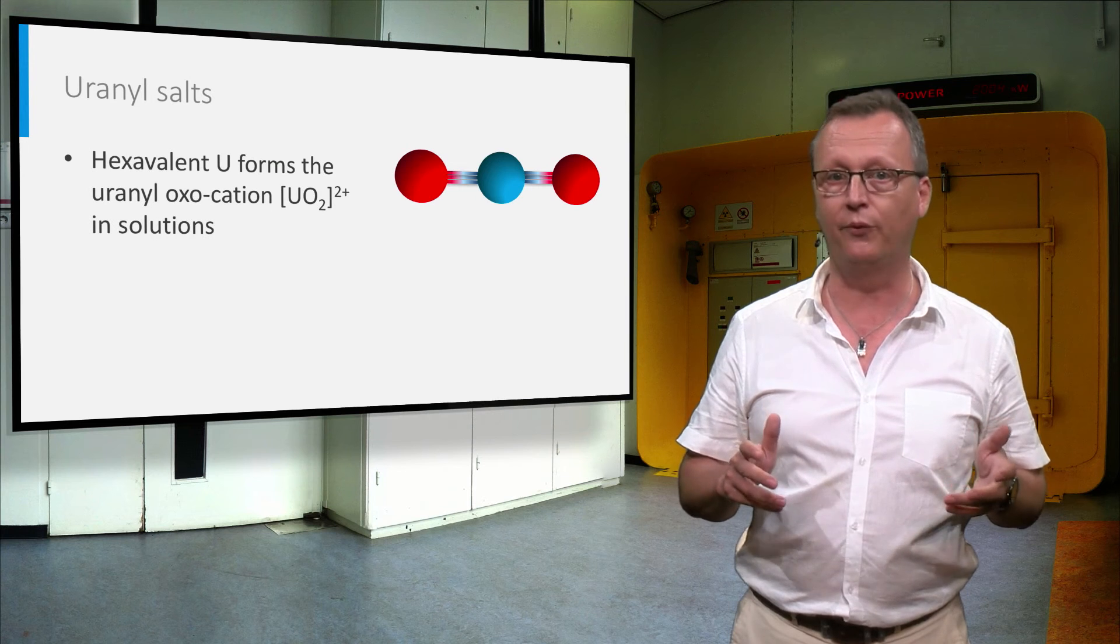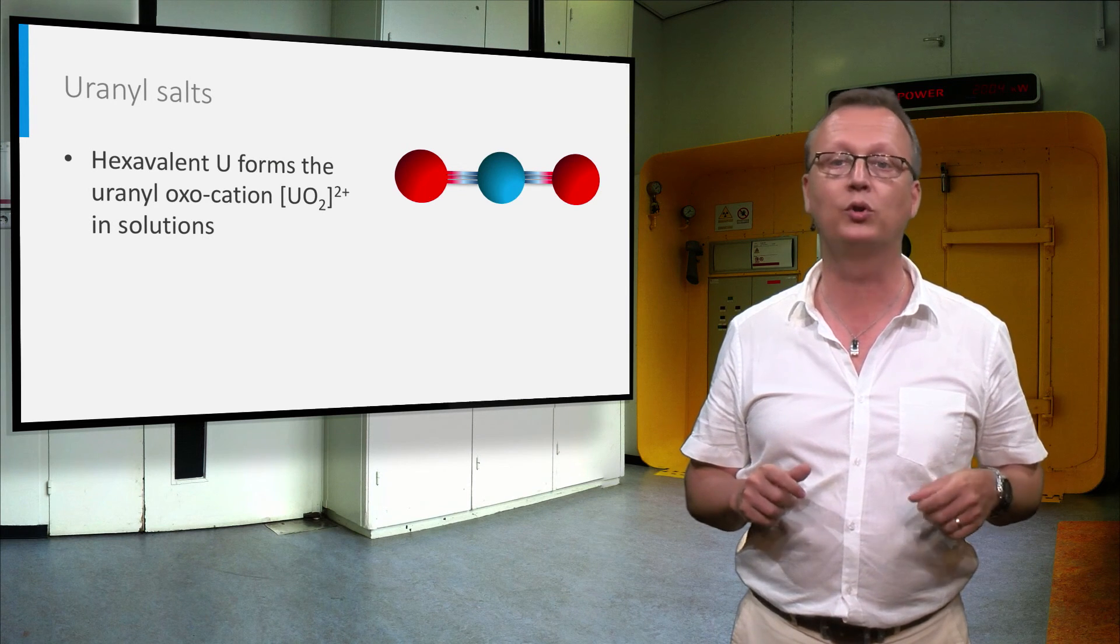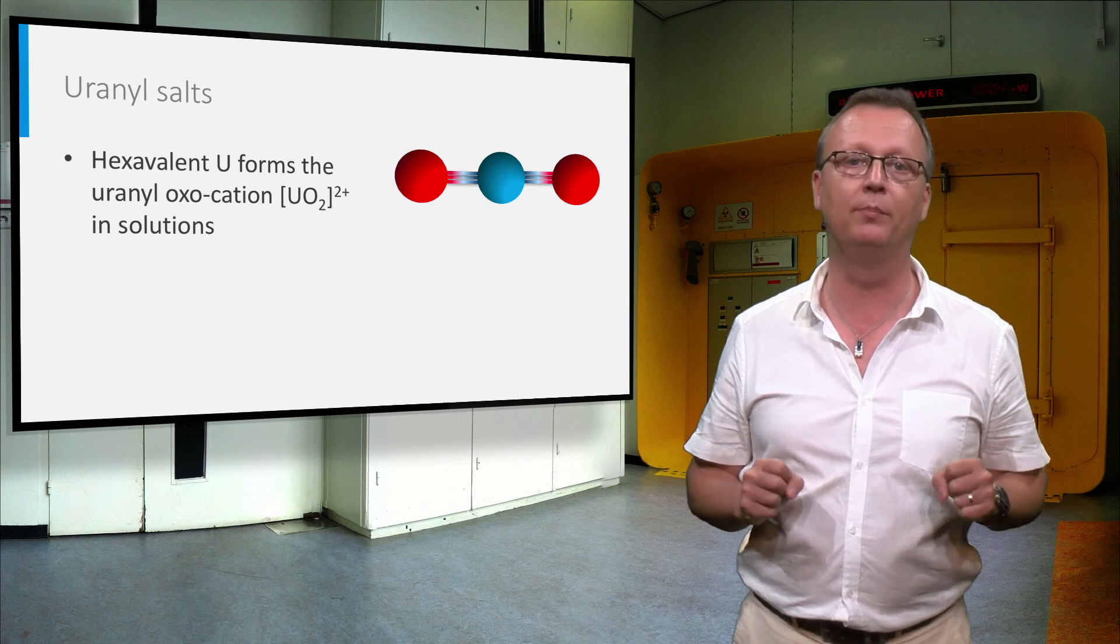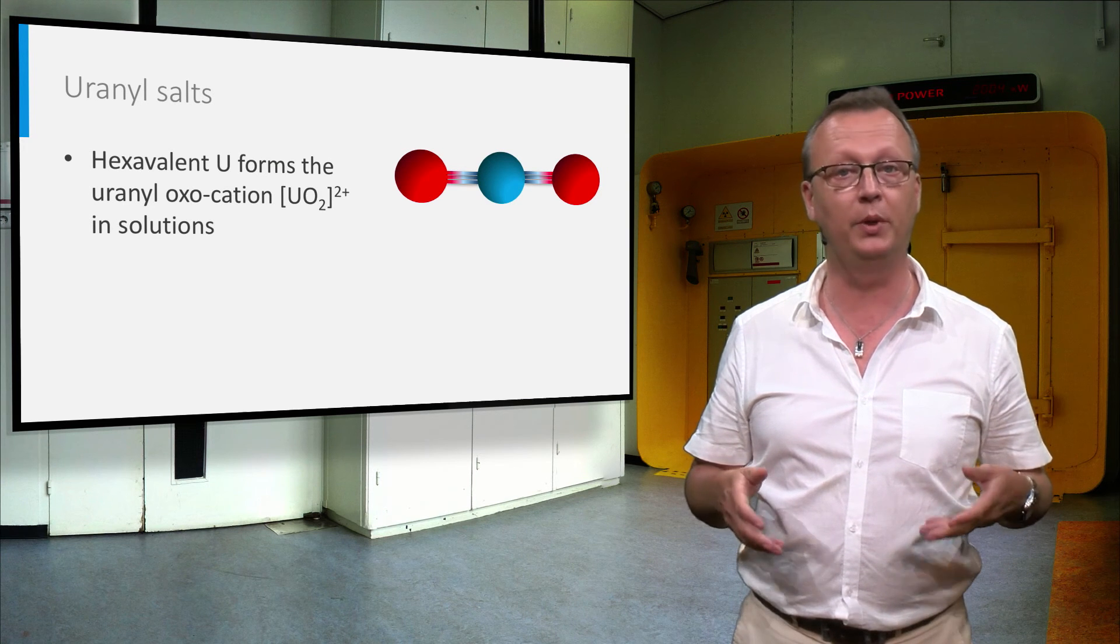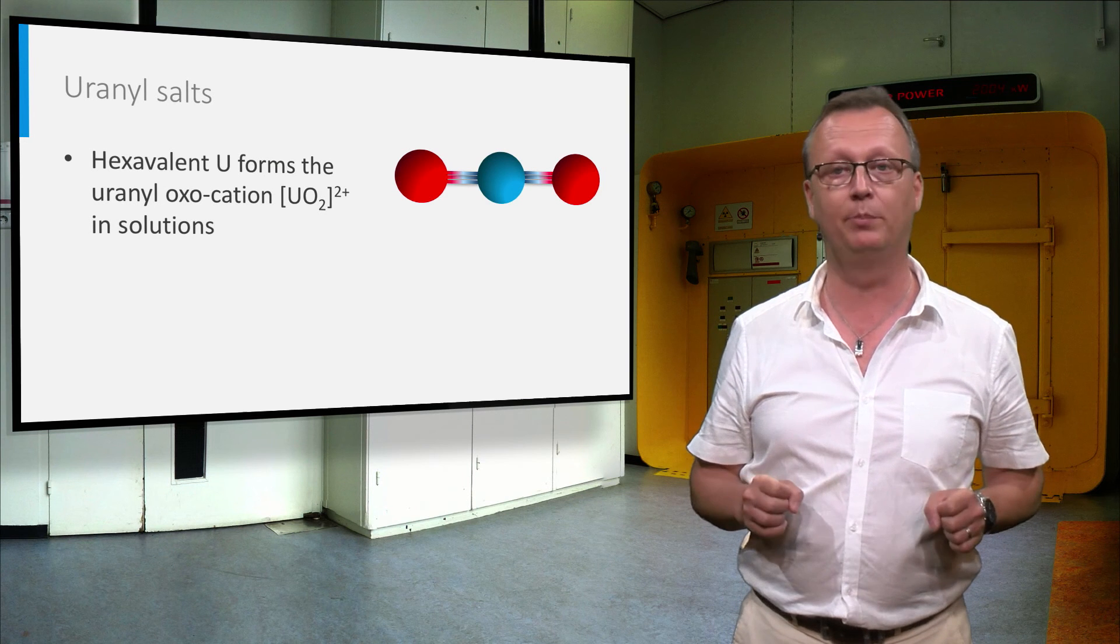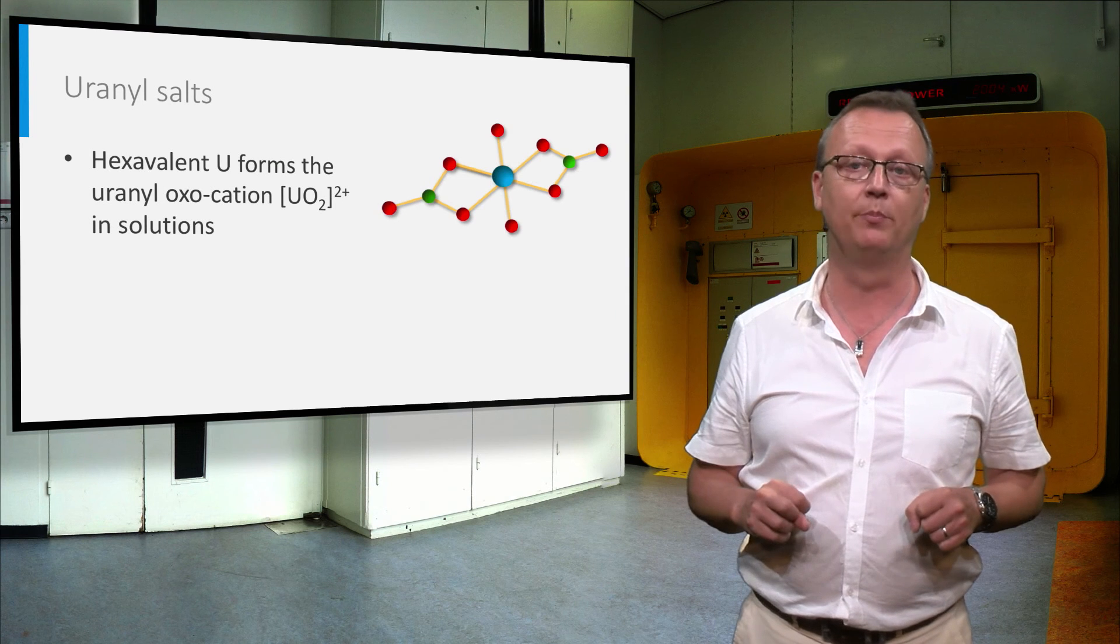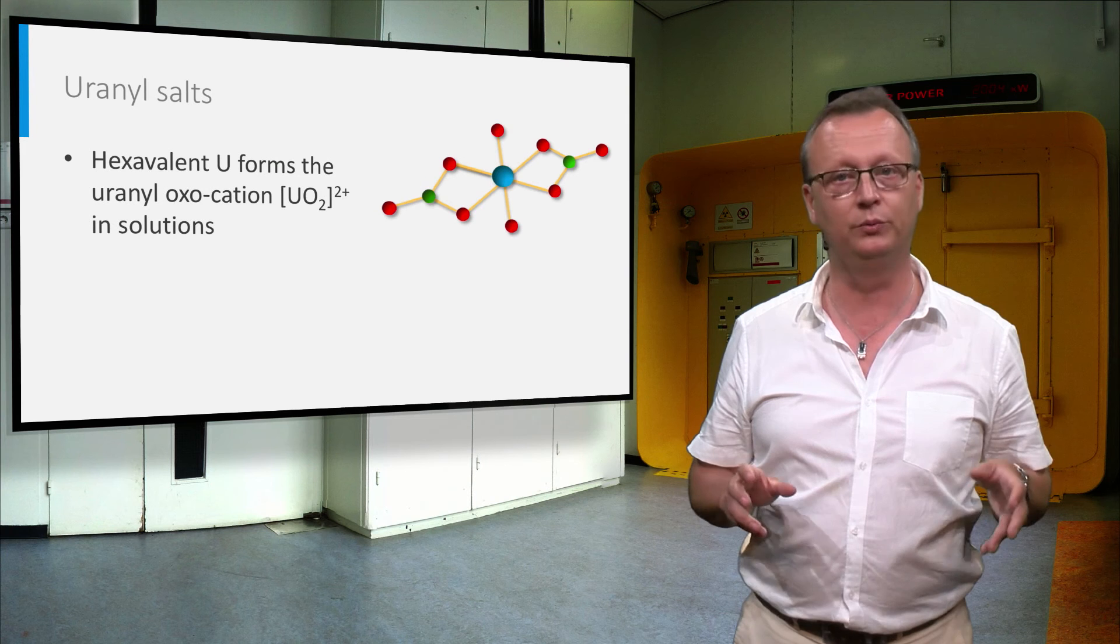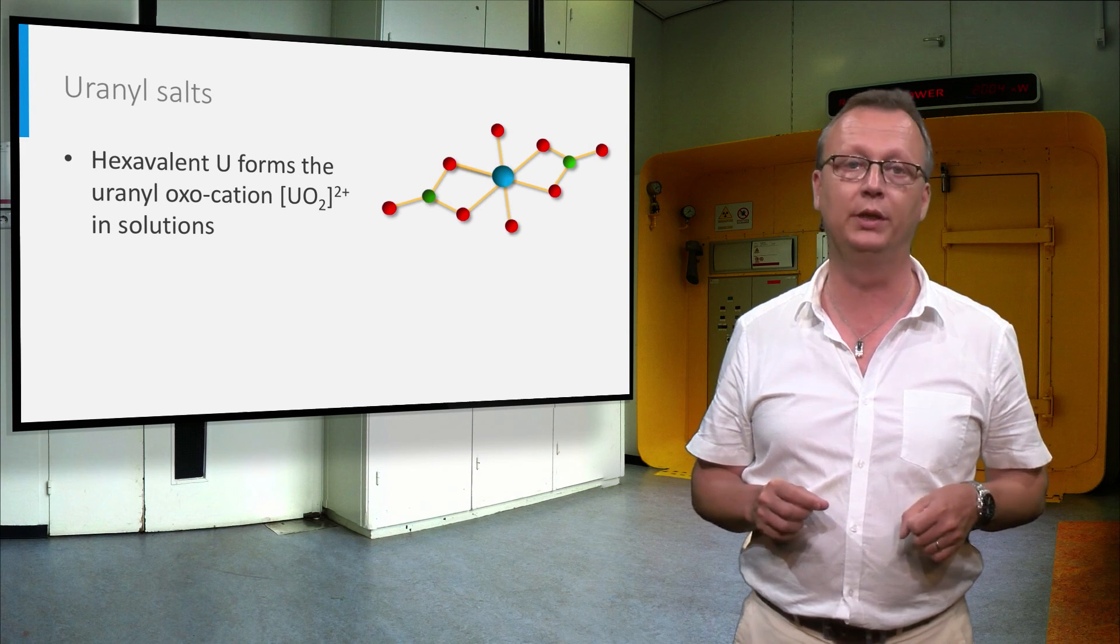The hexavalent uranium forms a very stable molecule in solution, the so-called uranyl oxocation. This is a linear molecule with a very strong triple bond between uranium and oxygen. Since the space around the positively charged uranium is free, all the ligands can bind to the molecule in the equatorial plane. Here you can see the uranyl nitrate molecule for example. In this molecule, two nitrate ligands bind to the uranyl with two oxygens each, giving the uranium a six-fold octahedral coordination.